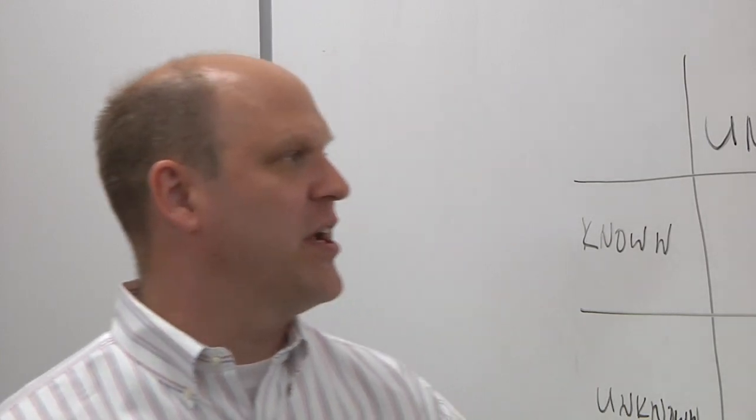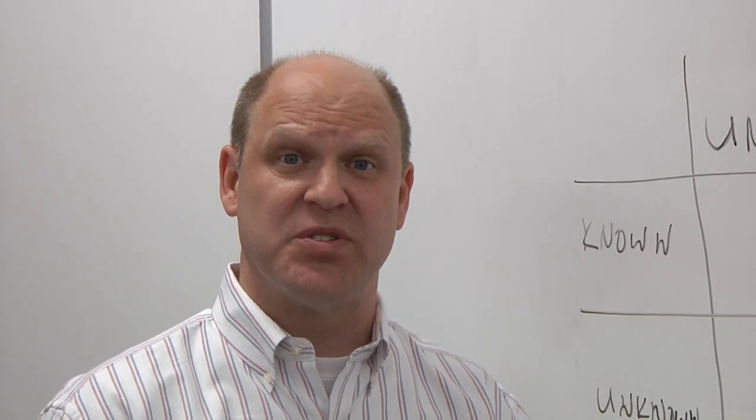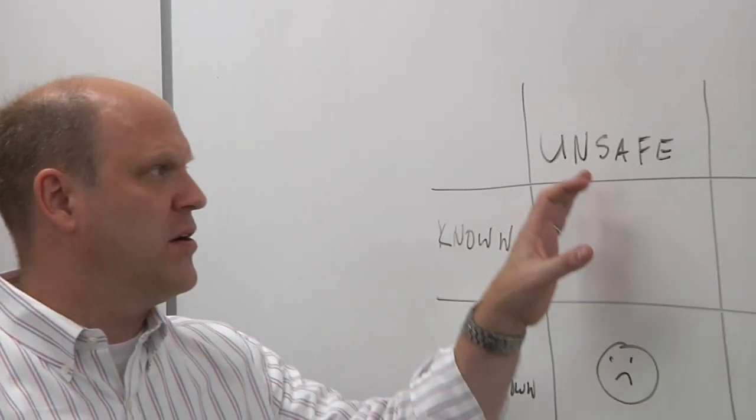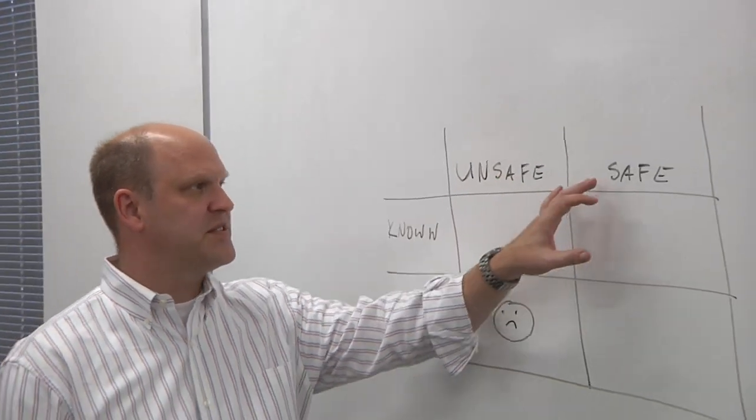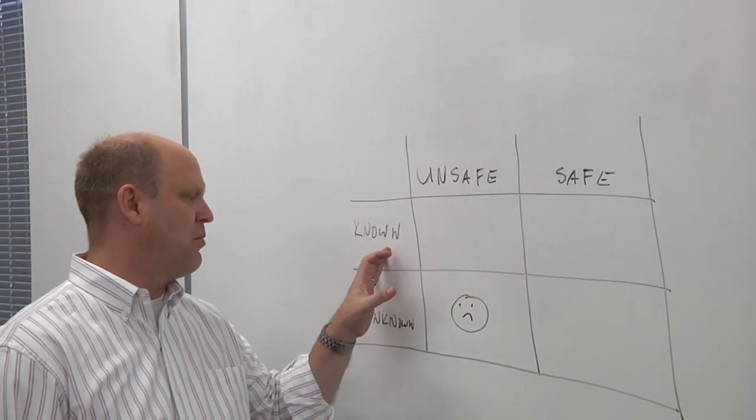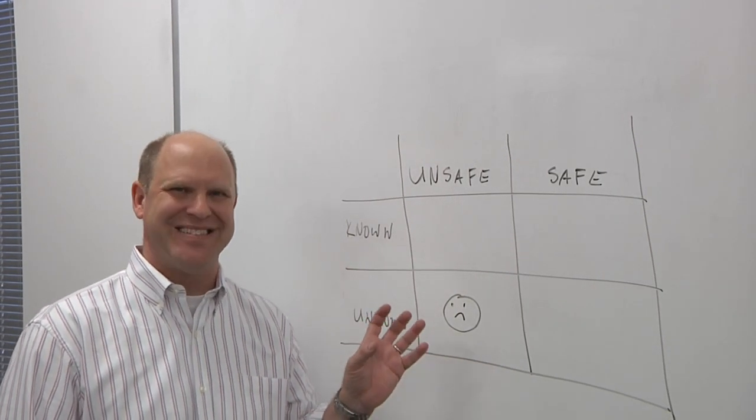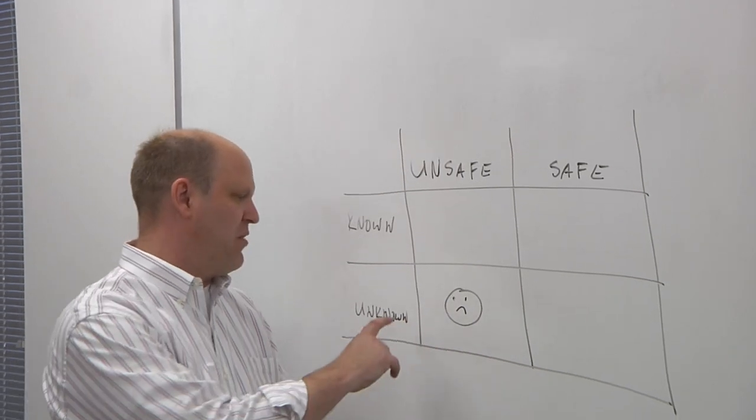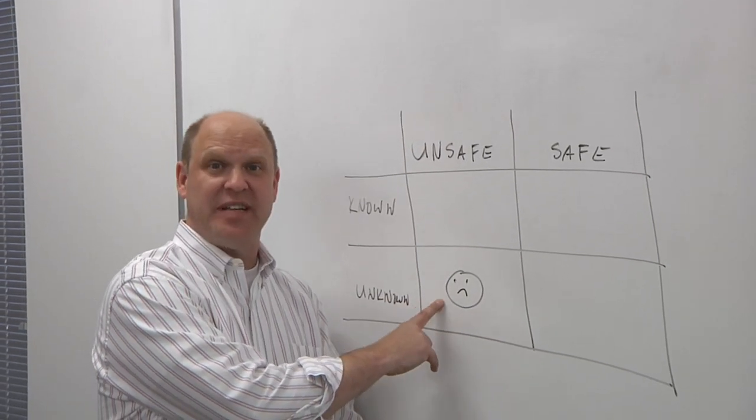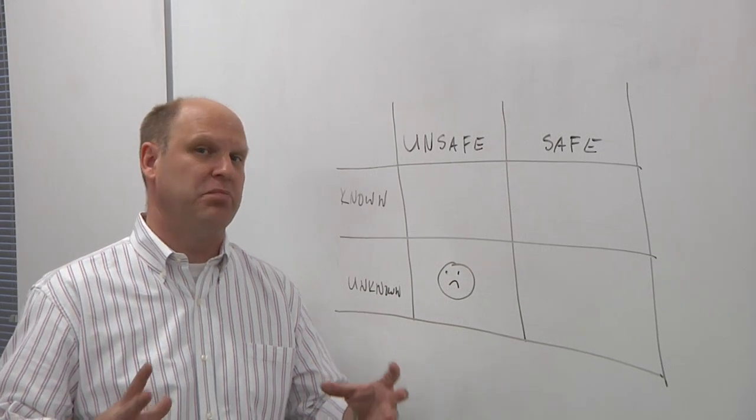And the big issue is that I've got this chart here, and you actually see this in the SOTIF spec. And here is unsafe state, safe state, known, and unknown. And what you're trying to do is limit the number of unknown unsafe states that the system could be in.